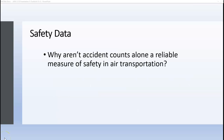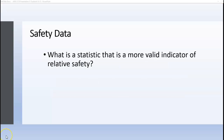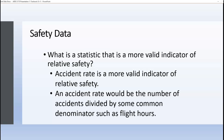Why aren't accident counts alone a reliable measure of safety in air transportation? There aren't enough accidents in commercial aviation to make this a useful statistic. An airline with a larger fleet will have more accidents, and aircraft models flown more often would have more accidents as well. Accident rates would be the most valid indicator — calculated as the number of accidents divided by a common denominator such as flight hours.